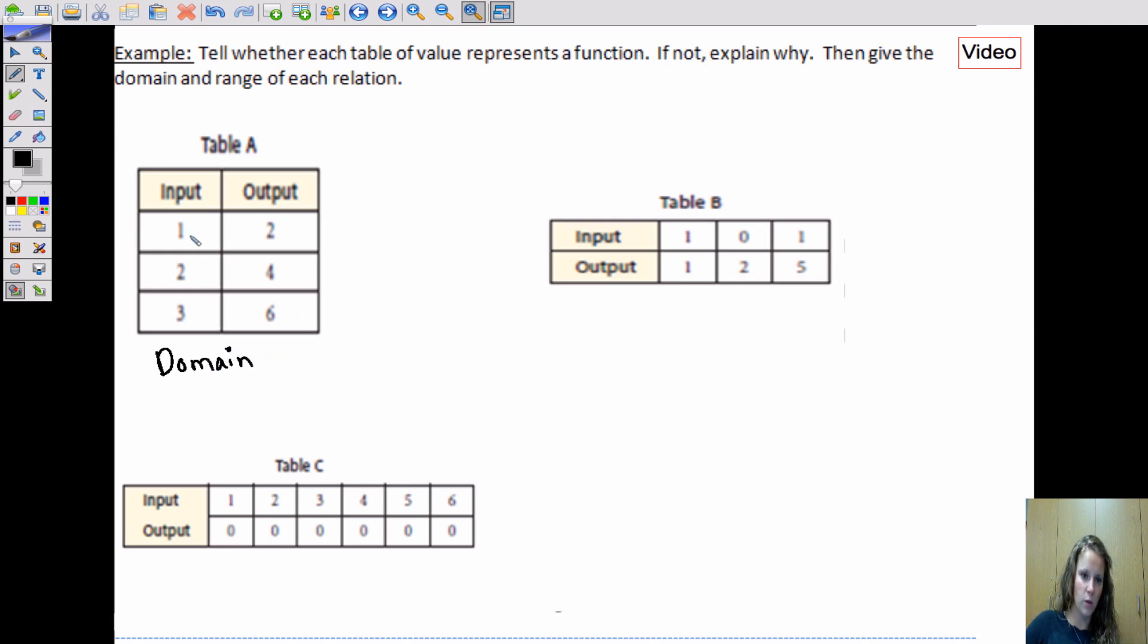So then the way we do this is we write that the domain in this table, now since we're only given three inputs in this table, that's the only thing in our domain. And we write domains in sets, which have these little brackets here. So the domain is {1, 2, 3}. Okay, those are our three inputs. Our range is {2, 4, 6}.